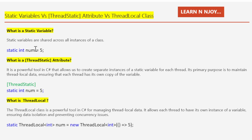Next, what is the thread static attribute? It is a powerful tool in C# that allows us to create separate instances of a static variable for each thread. Its primary purpose is to maintain thread-local data, ensuring that each thread has its own copy of the variable. To define a thread static variable, we simply decorate the static variable with the ThreadStatic attribute.